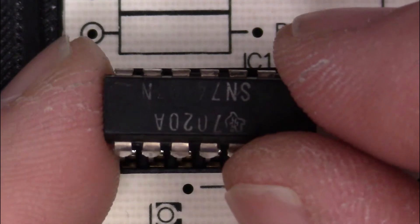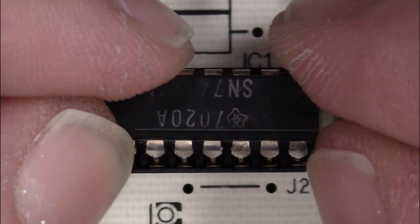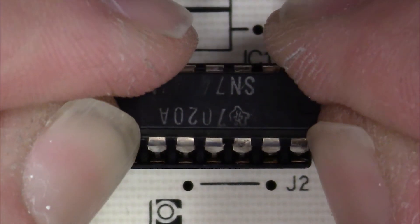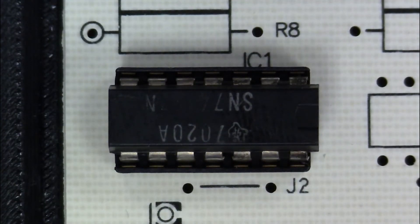Line up the chip indentation with the IC socket indentation. When installing the ICs, insert one side into the IC socket and push horizontally until the other leads line up with the sockets. Then press down firmly to install the ICs.